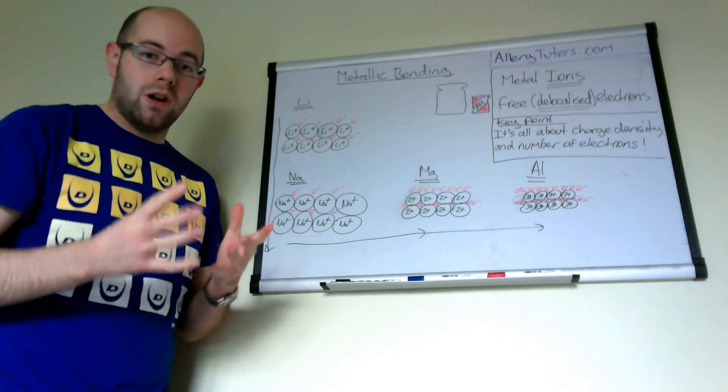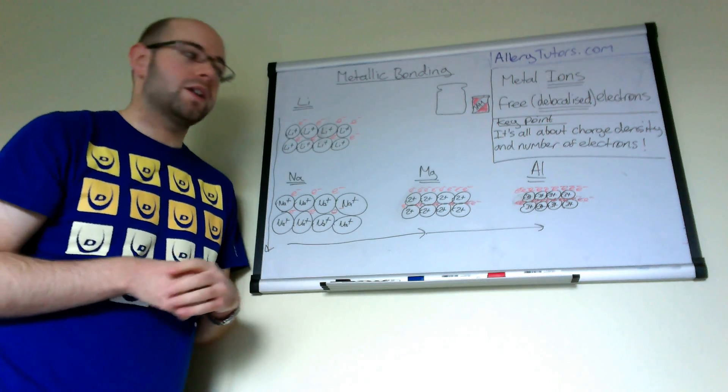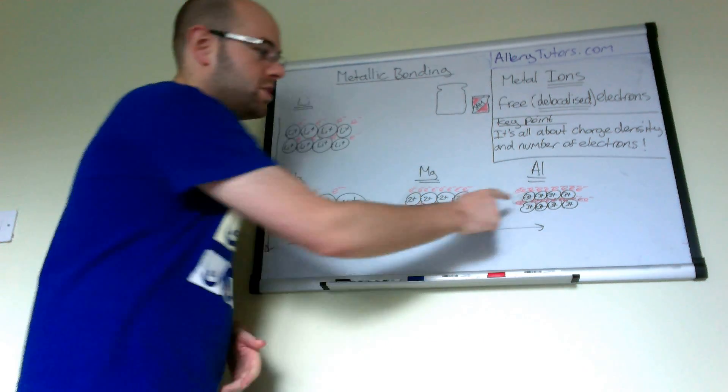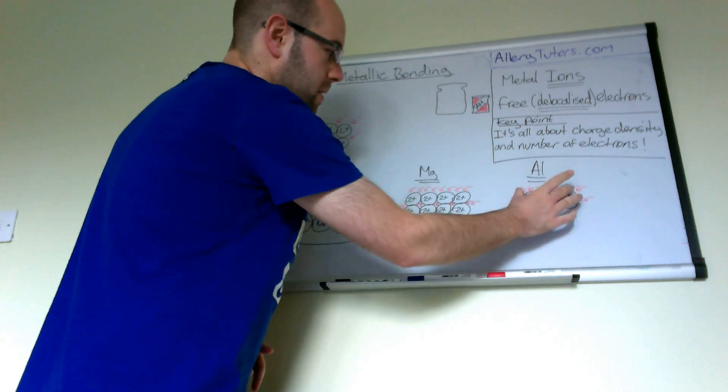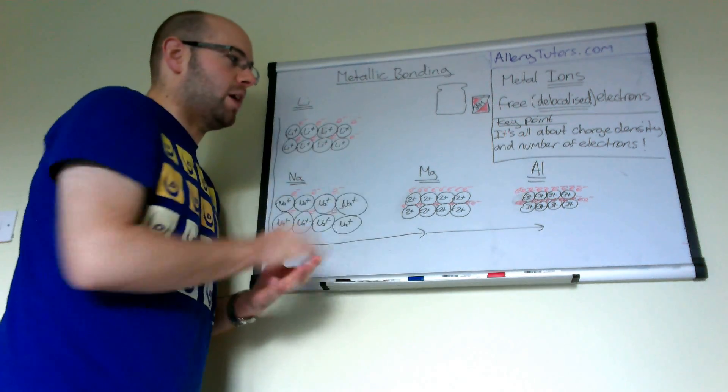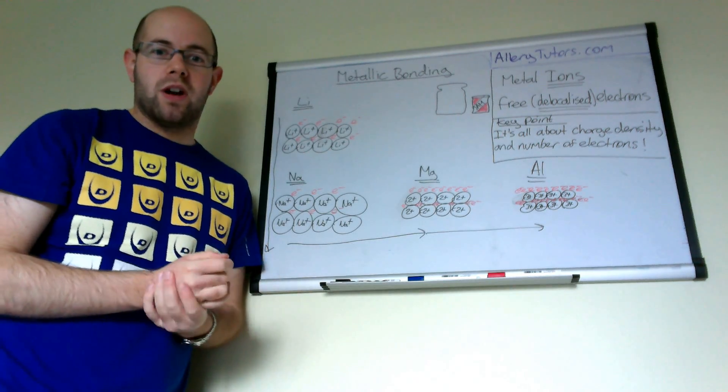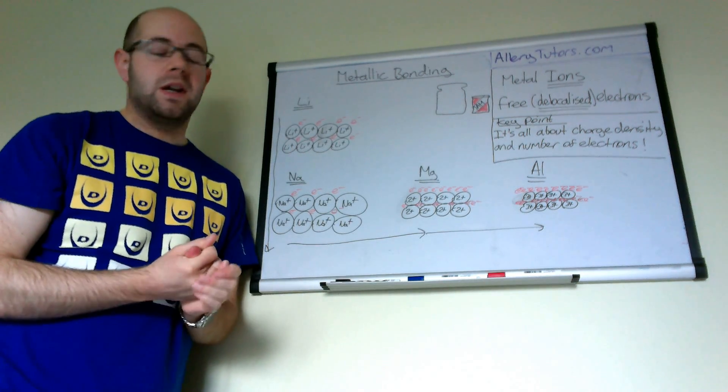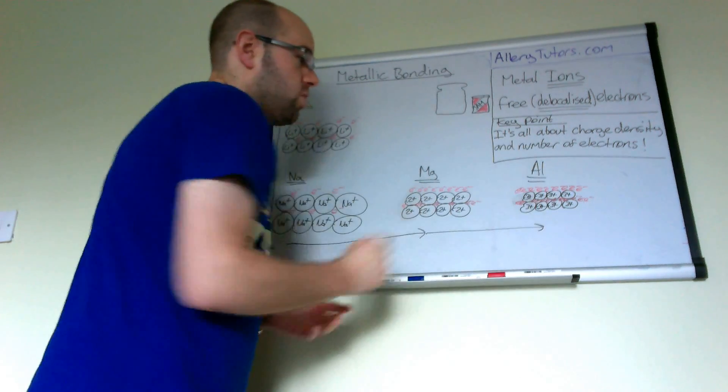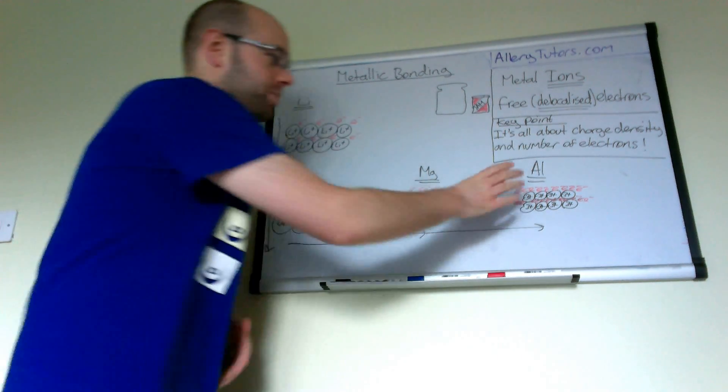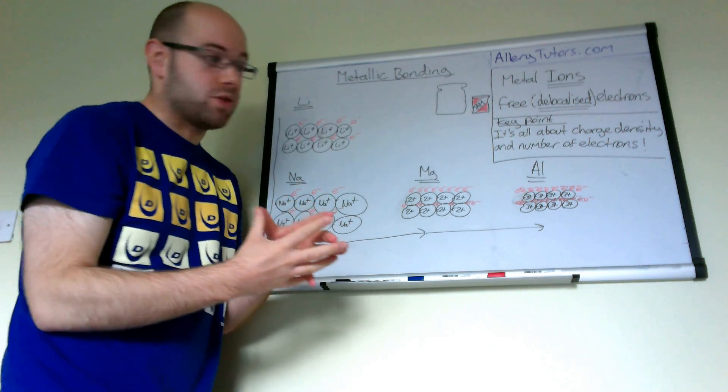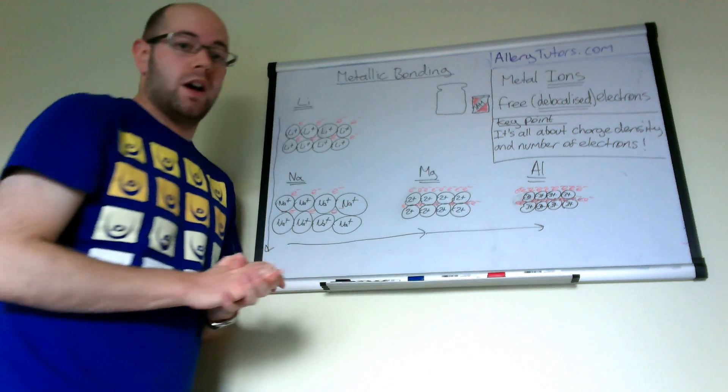You have a lot more electrons that are now delocalised. Because you've got more electrons delocalised with a higher charge density, it's three plus instead of two plus, the attraction is even stronger. That's why aluminum is quite strong and has a much higher melting point. The melting point aspect comes in because you've got a much stronger force of attraction between your positive ions and your electrons.